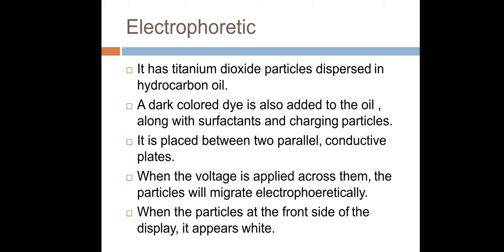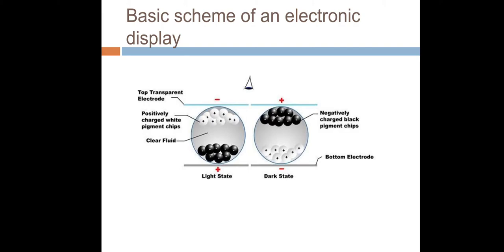Electrophoretic technology. It has titanium dioxide particles dispersed in hydrocarbon oil. A dark colored dye is also added to the oil. And it is placed between two parallel conductive plates. When the voltage is applied across them, the particles will migrate electrophoretically. When the particles at the front side of the display, it appears white.